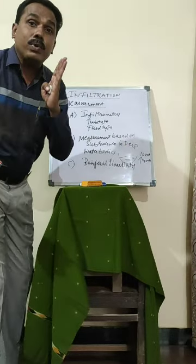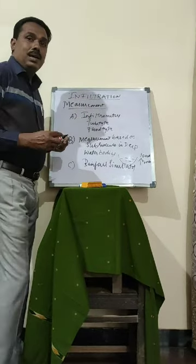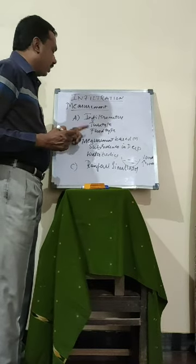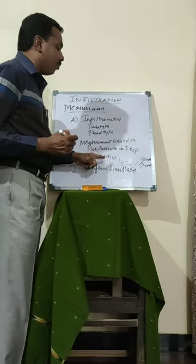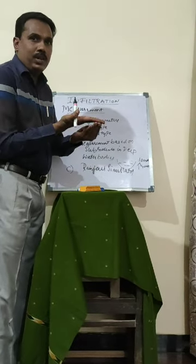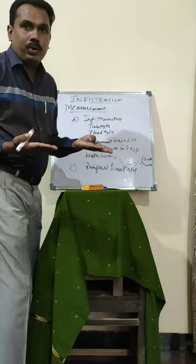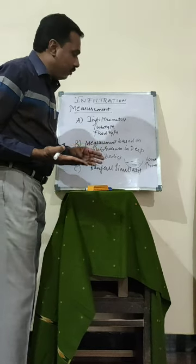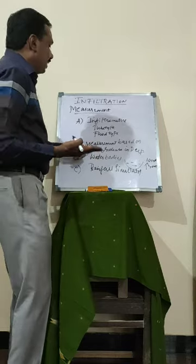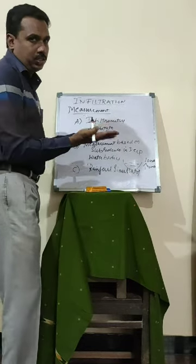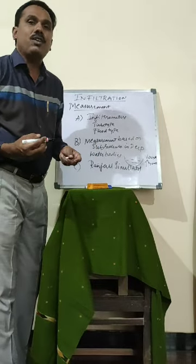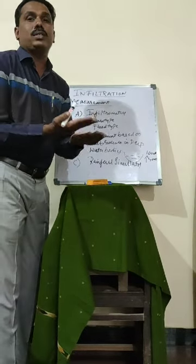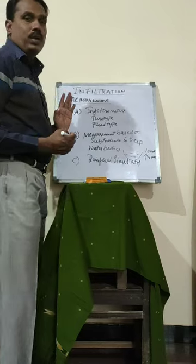These are the three ways to measure infiltration: infiltrometers — whether tube type or flood type; measurement based on subsidence in deep water bodies, using the water body equation by calculating the amount of evaporation to find the level of infiltration; and finally rainfall simulators, which means measuring the amount of rainfall in a particular area and using surface runoff and subsurface runoff to calculate the infiltration.